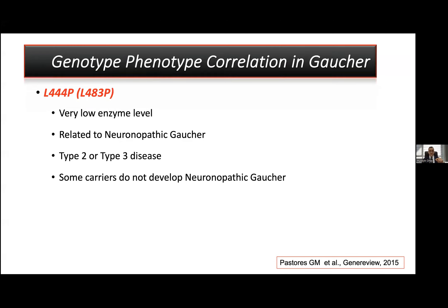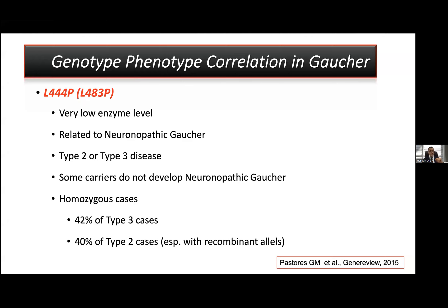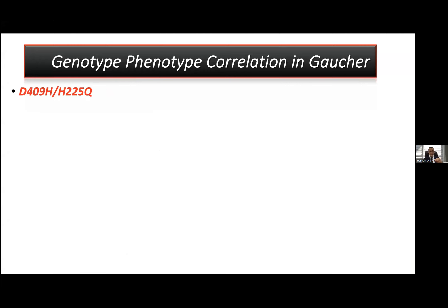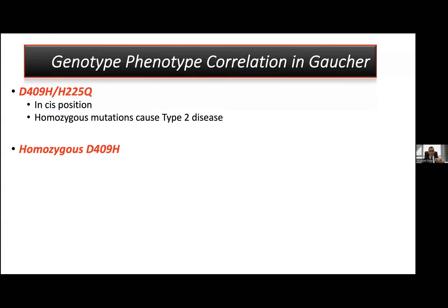In homozygous Type 2 cases, 42% of the mutations involve one specific variant, and in Type 2 cases, 40% have this specific variant. This mutation can cause Type 2 disease with double homozygous cases. If this variant is alone — not in cis with the other variant — then we can see Type 3C cardiac Gaucher disease. No homozygous recombinant allele has been reported in the world, which may be related to the perinatal lethal form.